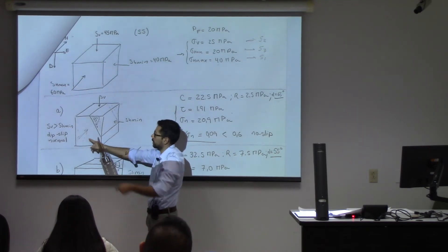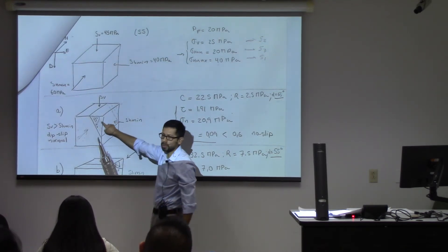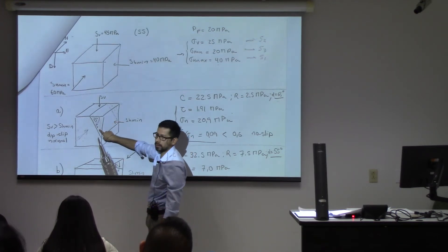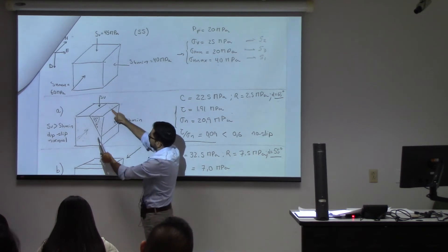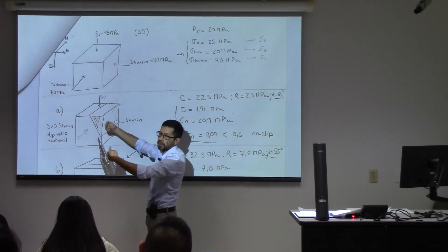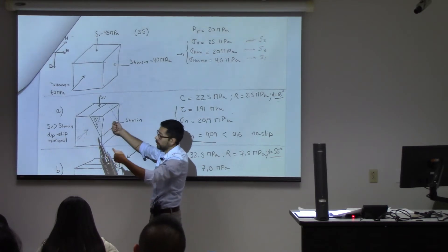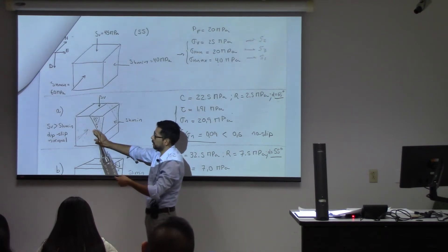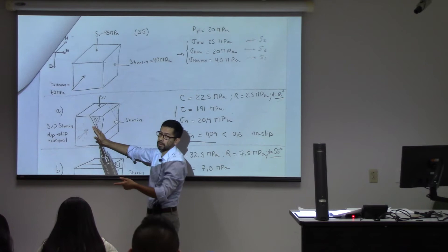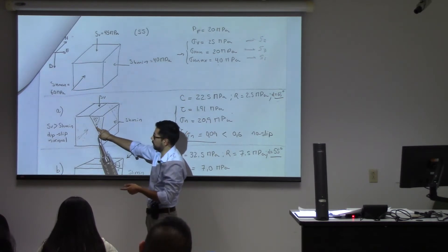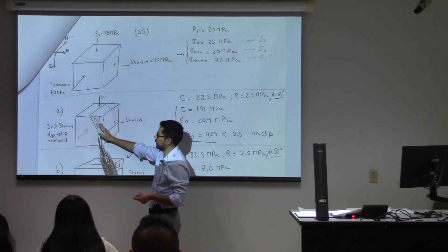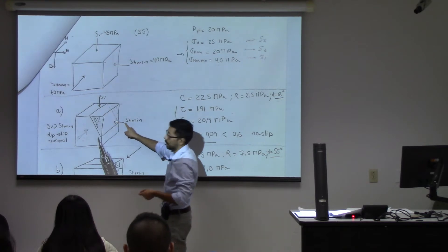But if you had SH max without the other two, would this one move or not? It won't move because it has the same stress on the two sides. The same stress you're applying here is the same that you apply on the back face — the two are the same, so it won't move. That in-plane stress is not going to make this thing move. Therefore, it doesn't participate in defining what is the normal stress and the shear stress on that plane. You only use SV and SH min.